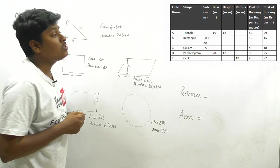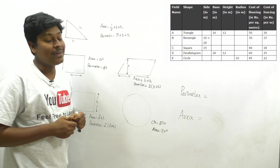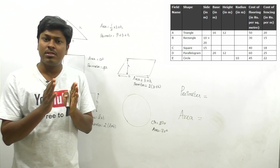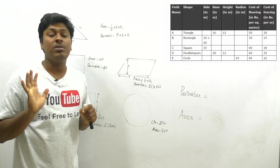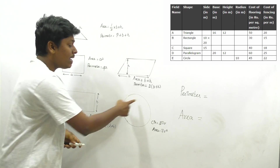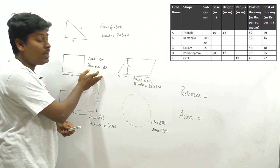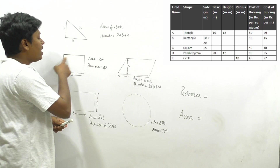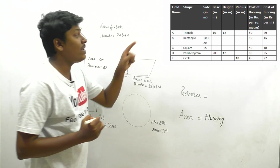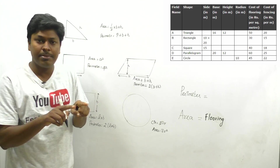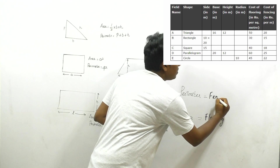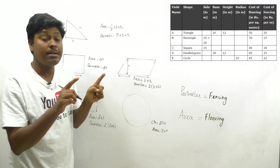The last two columns — cost of flooring and cost of fencing — play a major role in this table. Cost of flooring equals the area of that image. If they ask the cost of flooring for a square, calculate the area of the square. Cost of fencing is the border, which equals the perimeter.